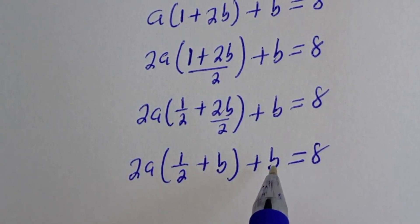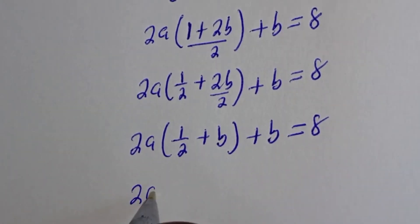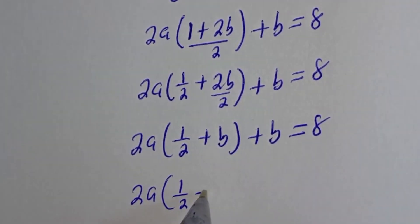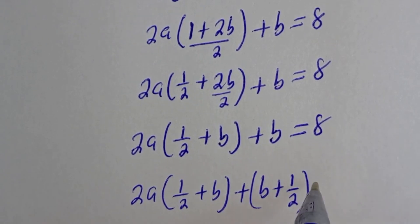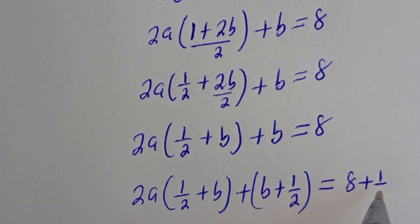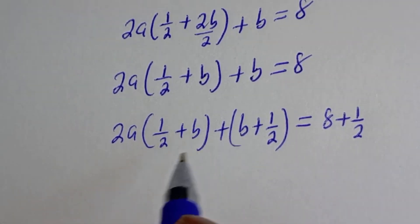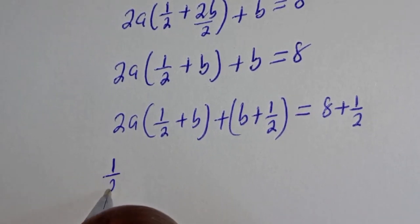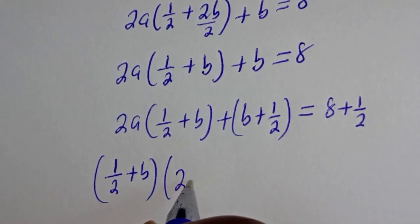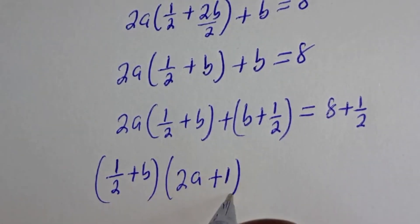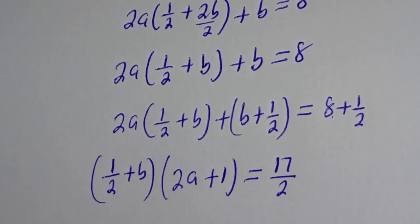Here we have 1 over 2 plus b. In order to make this 1 over 2 plus b, we need to add 1 over 2 to both sides. This gives 2a bracket 1 over 2 plus b plus b plus 1 over 2. Now 1 over 2 plus b is common — let's bring it out: this is 1 over 2 plus b bracket 2a plus 1 is equal to 8.